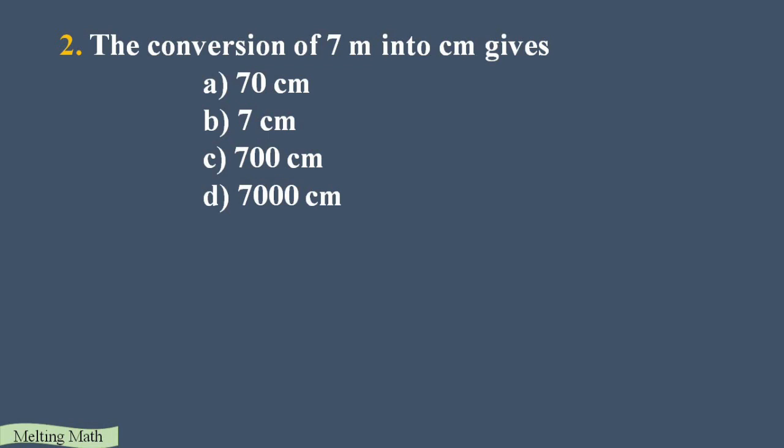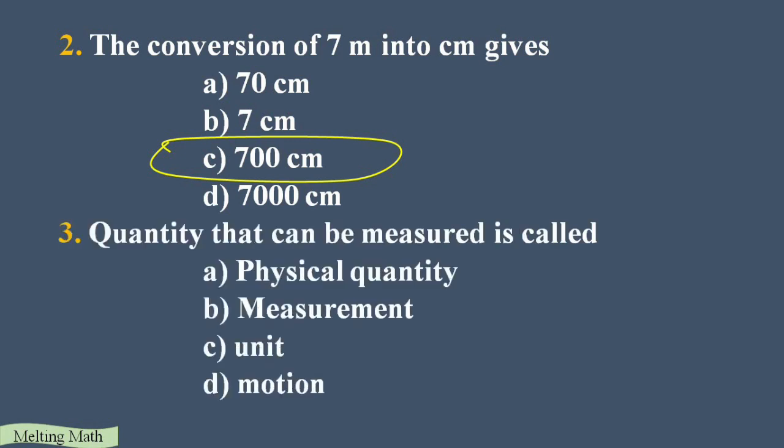Next, second question: the conversion of 7 meter into centimeter gives what? Option A: 70 cm, Option B: 7 cm, Option C: 700 cm, Option D: 7000 cm. One meter equals 100 centimeter, so multiply 7 into 100 — we get 700. So 700 centimeter is the answer. Third one: a quantity that can be measured is called what? The correct answer is Option A, physical quantity.